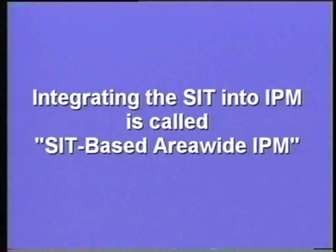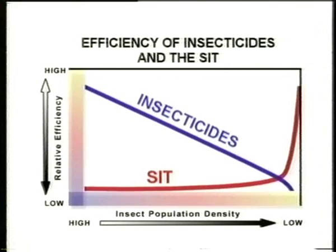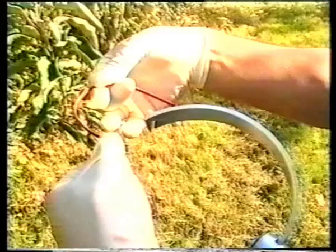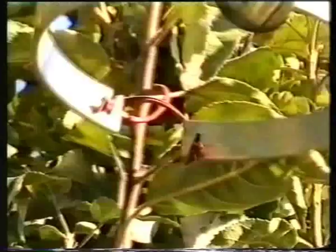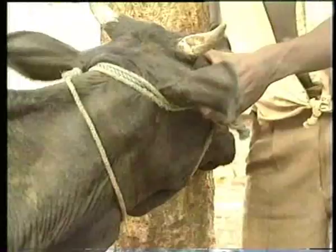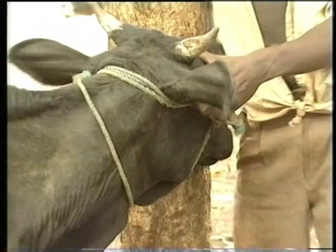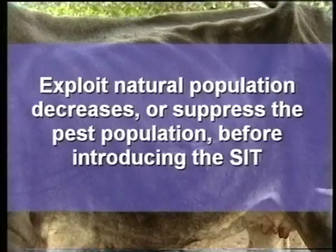In contrast to insecticides, the SIT is most effective and efficient at low pest densities. It is usually not a stand-alone technology, but is a complementary component of an area-wide and sustainable long-term strategy in IPM. Compatible control methods, such as natural enemy augmentation and pheromone mating disruption, can be synergistic when integrated with the SIT. It is therefore appropriate to exploit natural population decreases, or suppress the pest population, before introducing the SIT.